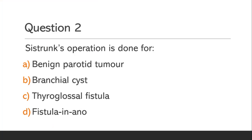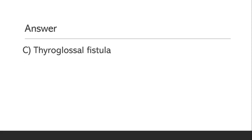Question 2. Sistrunk's operation is done for: Option A, Benign parotid tumour; Option B, Branchial cyst; Option C, Thyroglossal fistula; Option D, Fistula in ano. The answer is Option C, Thyroglossal fistula.